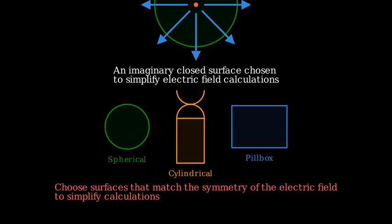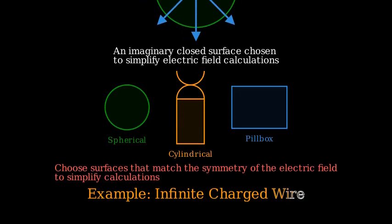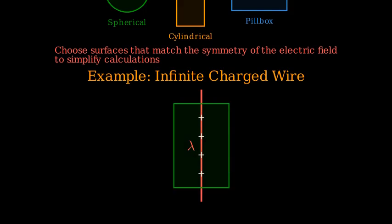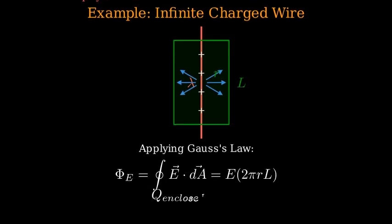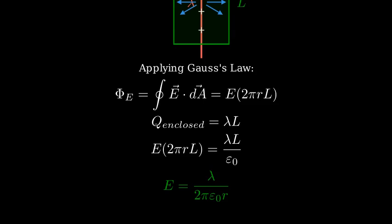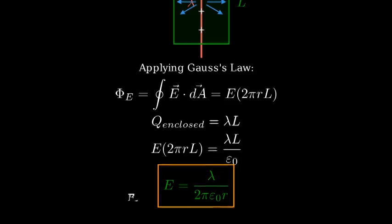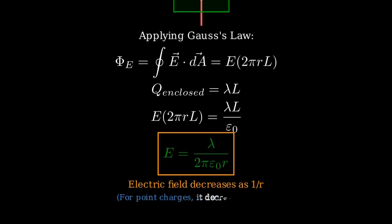Let's apply Gauss's Law to find the electric field due to an infinitely long charged wire. Suppose we have an infinitely long wire with a uniform linear charge density λ. We use a cylindrical Gaussian surface with the wire along its axis. Due to symmetry, the electric field must be radially outward from the wire and equal in magnitude at all points equidistant from the wire. Applying Gauss's Law, the flux through the sides of the cylinder is E × 2πRL, and the flux through the circular ends is zero since E is parallel to those surfaces. The charge enclosed is λL. Solving for E, we get E = λ / (2πε₀R). Notice that the electric field decreases with 1/R, not 1/R², as for a point charge — a key result for infinitely long charged wires.